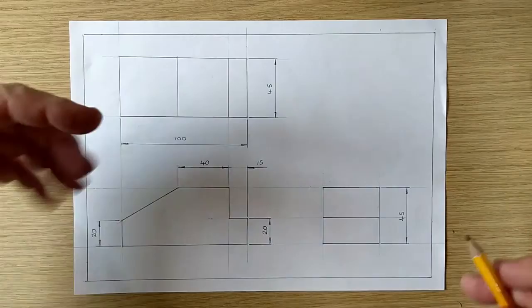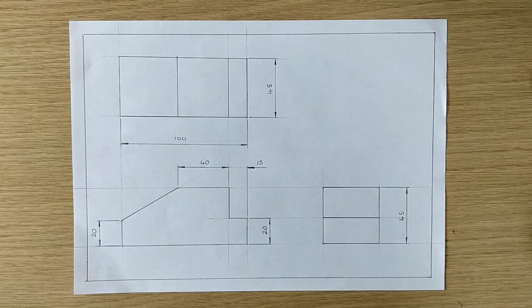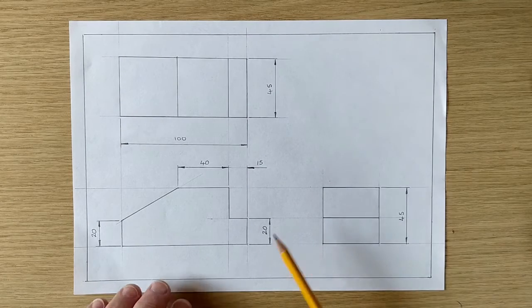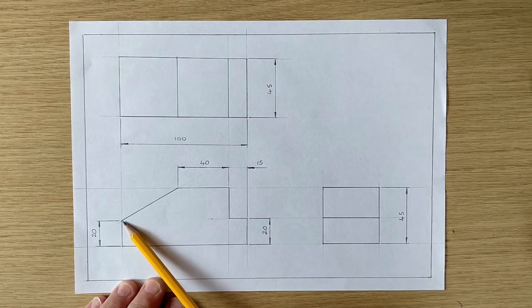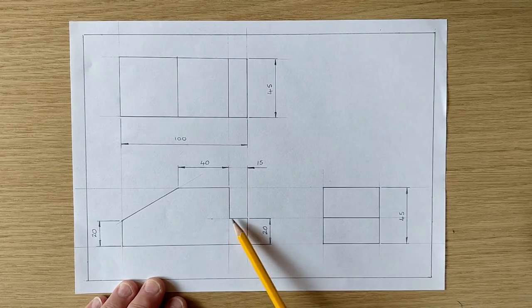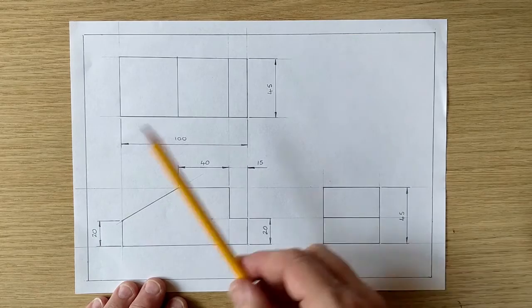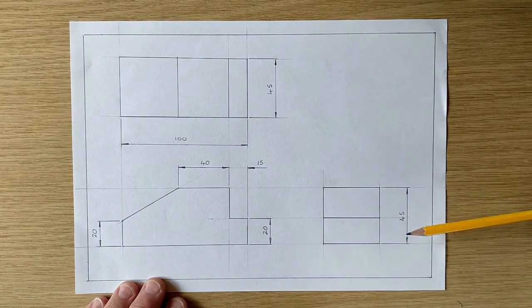So you can see now that our drawing has all the measurements needed for somebody to go make that block. You notice I've repeated a dimension here. That's because it's not clear that that is the same height as that, so I've had to put that on just to make sure.